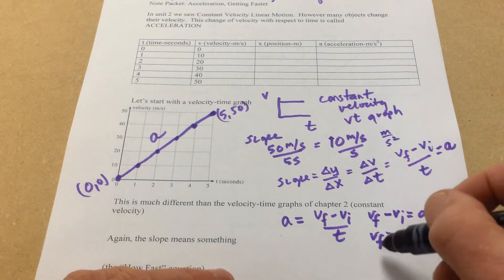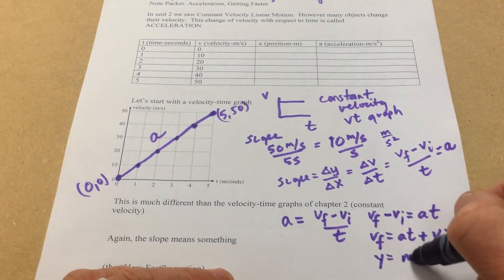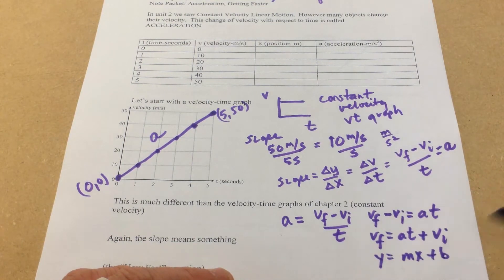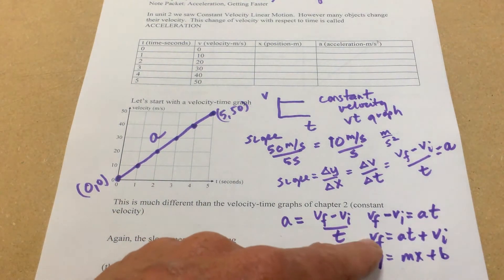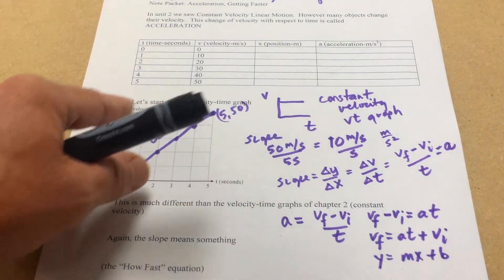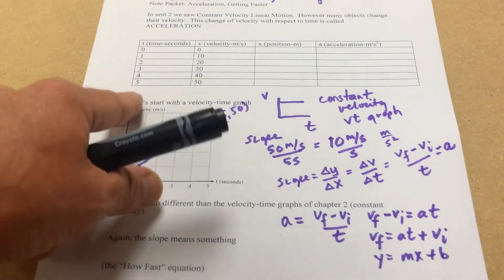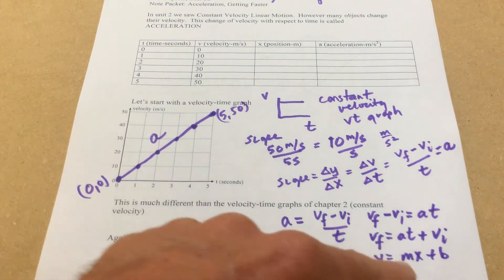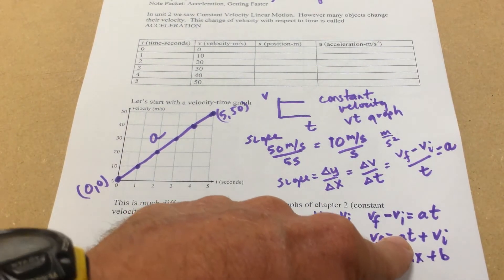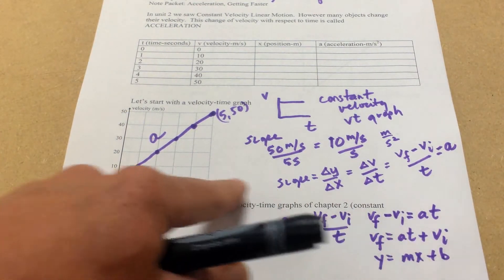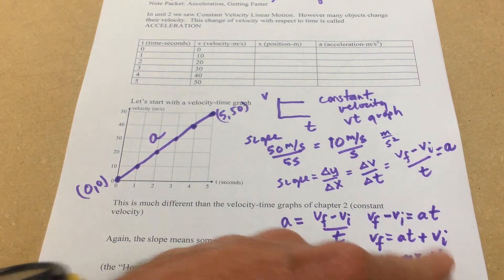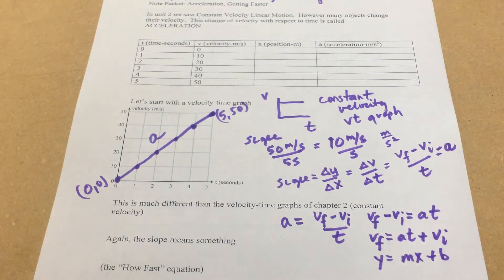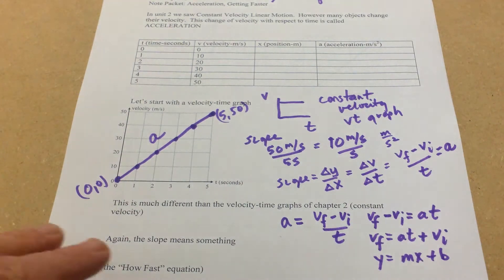Now look what we have — this looks very similar to Y equals MX plus B. Our final velocity is the Y variable. Velocity is on the Y-axis. Our slope M is our acceleration. Our X variable is time. And our initial intercept is the initial velocity the object has — in this case, zero meters per second.